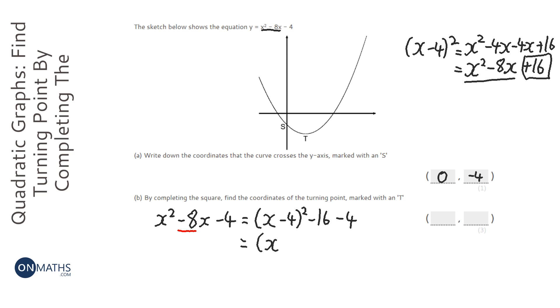And we do have videos on completing the square which go into a little bit more detail than I'm going through here, so watch those if you're not sure. We're going to put the minus 16 and the take away 4 together. OK, so here we've got an x and we're subtracting 4, we're going to square that and then take away 20.